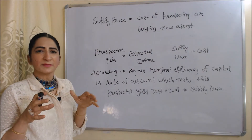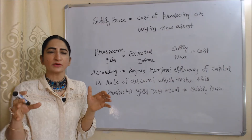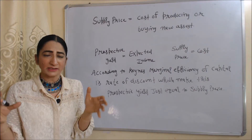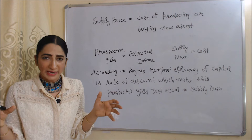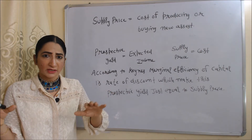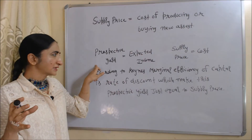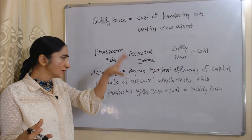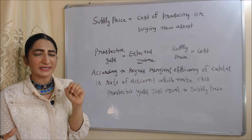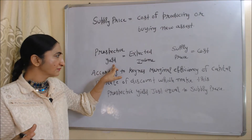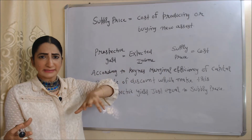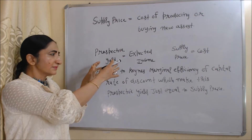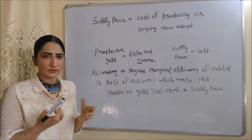Now, supply price is the cost of producing or the cost of buying a new asset. In supply price, we only include the cost of the new asset, not the cost of an existing asset. So, prospective yield is the expected income from a new asset and supply price is the cost of the new asset. According to Keynes, marginal efficiency of capital is the rate of discount that makes prospective yield just equal to supply price — or makes the income expected from a new asset just equal to the cost of the new asset.